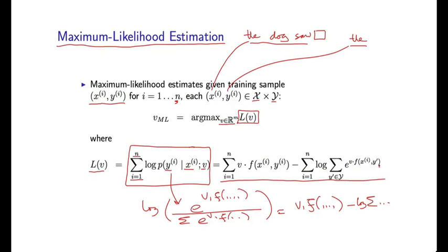Okay. So that is the basic definition of the maximum likelihood estimation problem. We're going to try to choose the parameters v to make this function L of v as large as possible.